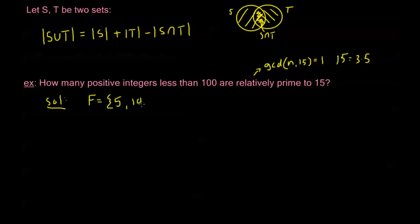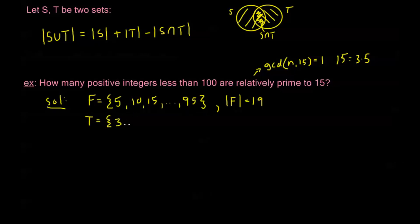F equals {5, 10, 15, ...} and since we're talking about less than 100, this goes all the way up to 95. If we went all the way to 100 we'd have 20 elements, but since we stop at 95, the order of F is just 19. I'm going to let T be all integers between 1 and 99 that are multiples of 3: {3, 6, 9, ..., 99}. The order of T is 33.